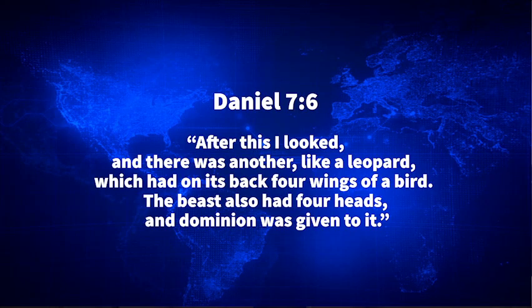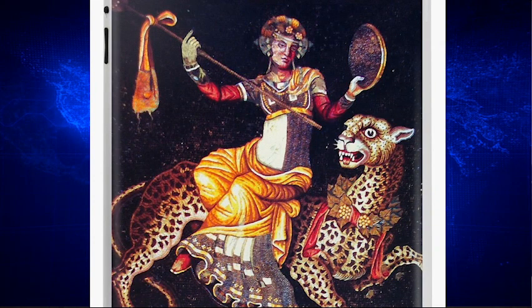Then it goes on to talk about a third beast. It says: 'After this I looked, and there was another, like a leopard, which had on its back four wings of a bird. The beast also had four heads, and dominion was given to it.' In Greek mythology, one of their gods, Dionysus, wore a leopard head as a skin and was pulled through the skies in a chariot by leopards. So God may be showing us that the leopard was symbolic of the kingdom of Greece.